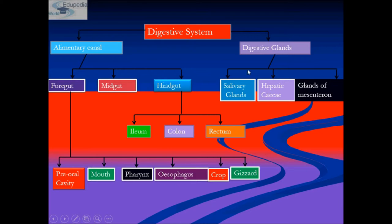The digestive system is divided into two parts: the alimentary canal, where digestion takes place in specialized cavities joined to form a continuous canal, and the digestive glands. The alimentary canal is divided into three main portions: foregut, midgut, and hindgut.